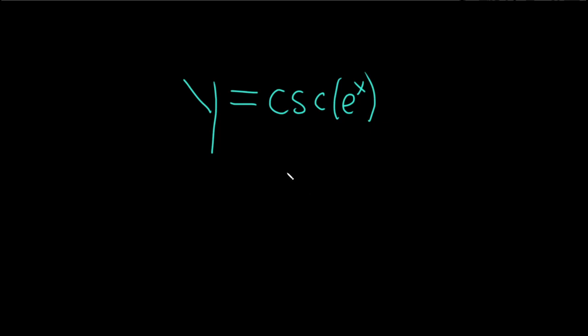In this problem, we have to find the derivative of the cosecant of e^x. First note that if you just have cosecant of x and you take the derivative, the formula is negative cosecant x cotangent x.